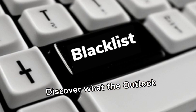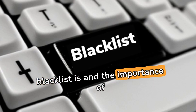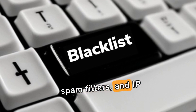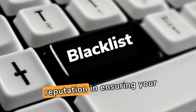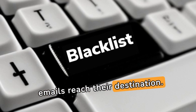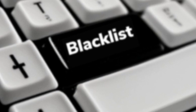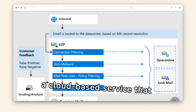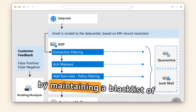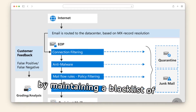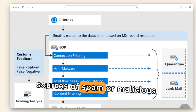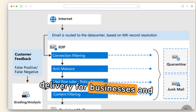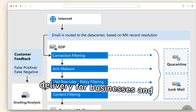Discover what the Outlook Blacklist is and the importance of email authentication, spam filters, and IP reputation in ensuring your emails reach their destination. Microsoft's EOP is a cloud-based service that protects against email threats by maintaining a blacklist of IPs identified as sources of spam or malicious content, affecting email delivery for businesses and organizations.